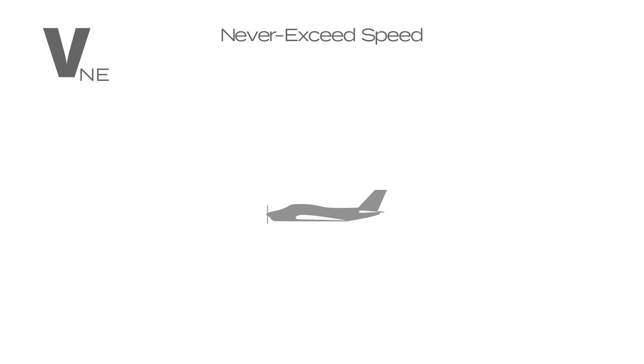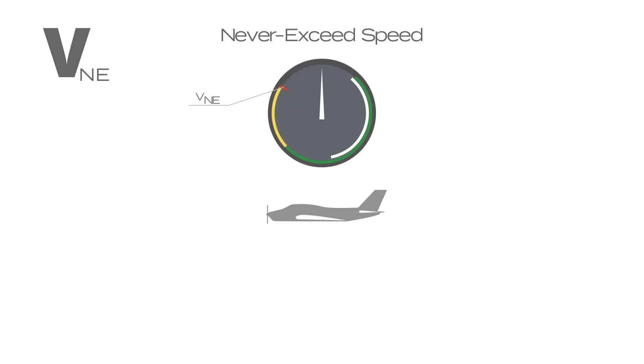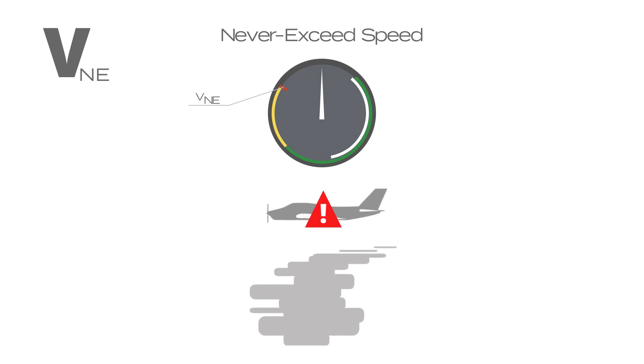Never exceed speed is represented by VNE. This speed applies to piston powered aeroplanes and is also known as the red line speed. At this speed any turbulence can overstress the structure of the aeroplane.